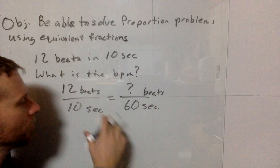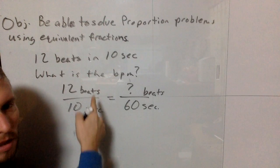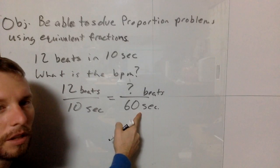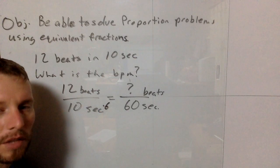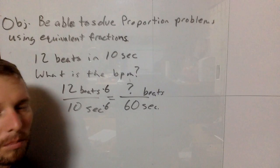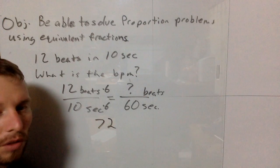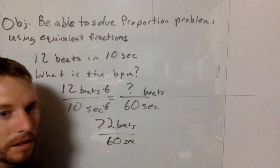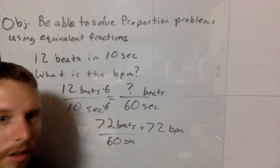Similar to the other proportions, we could simplify, but since 60 seconds is already 1 minute, I'll just find the multiplier. 10 times 6 gives us 60, so 12 times 6 gives us the beats per 60 seconds, which is beats per minute. 12 times 6 is 72, so we have 72 beats over 60 seconds, or 72 beats per minute. That's a quicker way to find your heart rate.